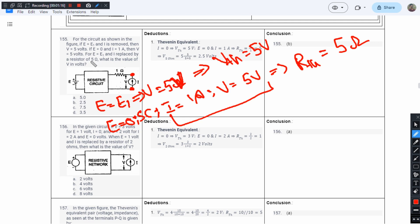Now the question is if E equals E1 and I is replaced by a resistor—we are talking about a Thevenin equivalent circuit—we are replacing the current source here with a resistance of 5 ohm. The Thevenin resistance is 5 ohm and the Thevenin voltage is 5 V.